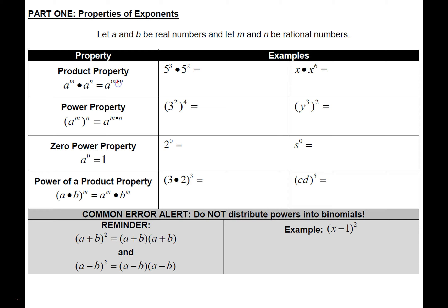This addition is happening because we're multiplying together. A couple of things to notice: the base is going to stay the same — it's still going to be five, not 25. We are only adding together the exponents, the three plus the two. So that's five to the fifth power, which is 3125.